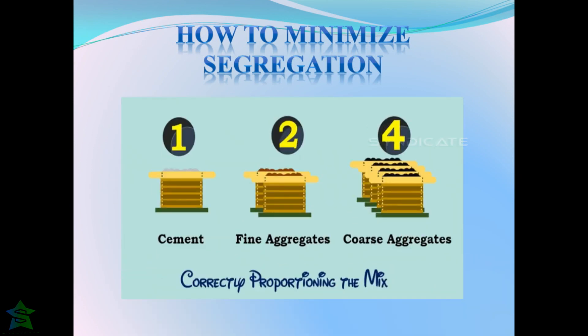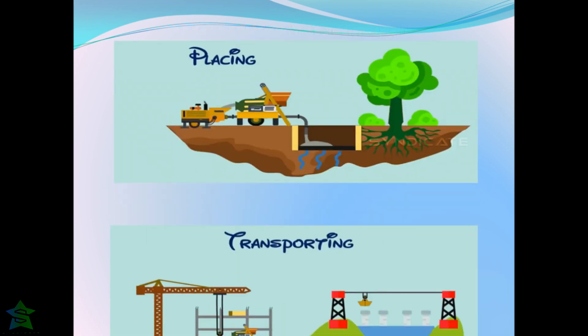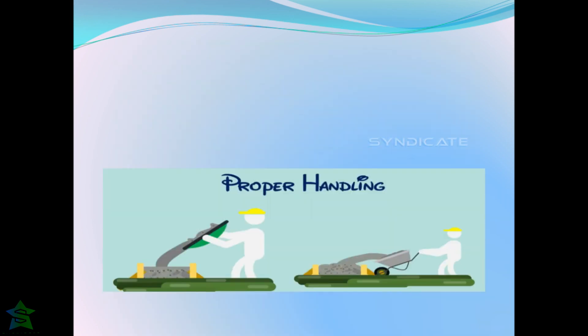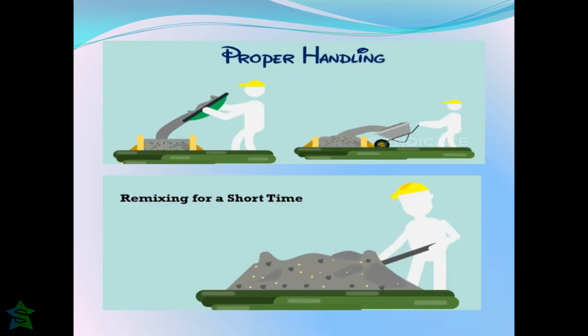The tendency for segregation can be remedied in the following ways. First, by correctly proportioning the mix — the coarse aggregates, fine aggregates, cement, and water must be mixed in correct proportions to form a cohesive paste which doesn't allow cement slurry and aggregates to fall apart. Segregation can also be reduced by proper placing and transporting — placing concrete from one meter height and reducing transportation time consequently reduces segregation.